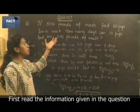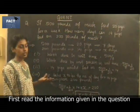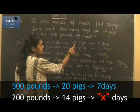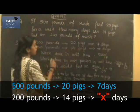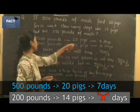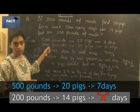First of all, let's see what information we have from this question. It says 500 pounds of mush can feed 20 pigs for 7 days. We have to find out how many days will 14 pigs take to complete 200 pounds of mush.